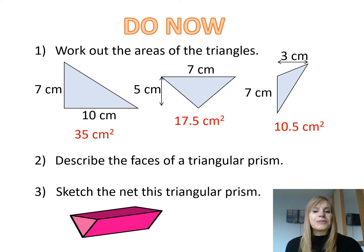When you're describing the faces of a triangular prism, that's what shapes are the faces. We have two triangles and three rectangles, and a triangular prism has a net that looks like this.